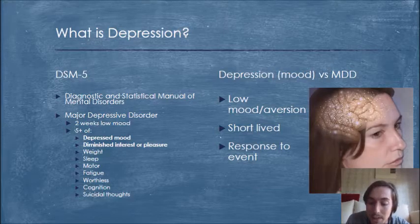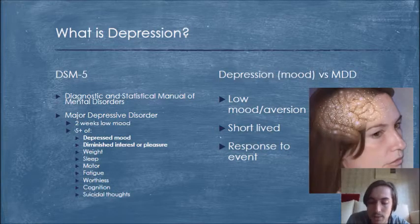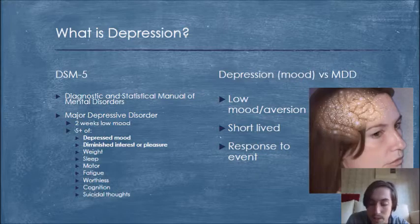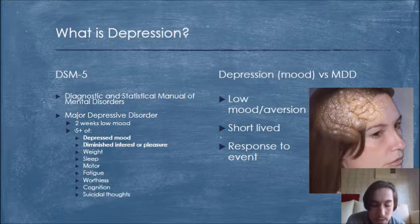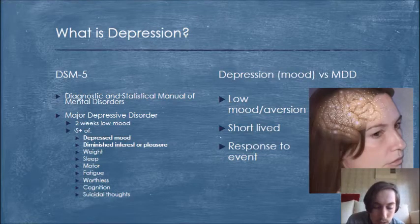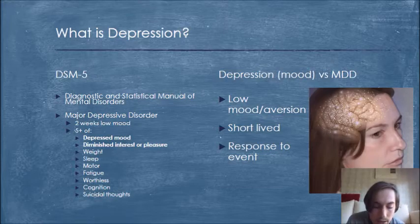Further criteria include insomnia or hypersomnia nearly every day; psychomotor agitation or retardation nearly every day, observable by others and not merely subjective feelings of restlessness or being slowed down; fatigue or loss of energy nearly every day; feelings of worthlessness or excessive or inappropriate guilt, which may be delusional, nearly every day; diminished ability to think or concentrate, or indecisiveness nearly every day; and lastly, recurring thoughts of death — not just fear of dying but recurrent suicidal ideation without a specific plan, or a suicide attempt, or a specific plan for committing suicide.